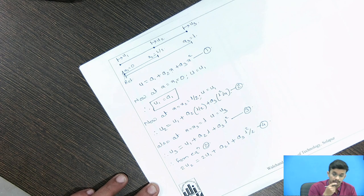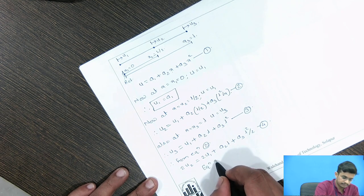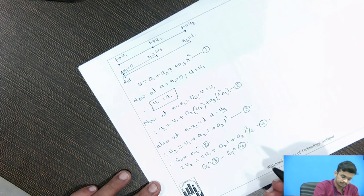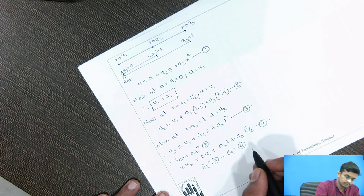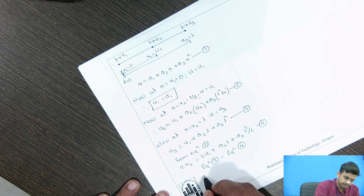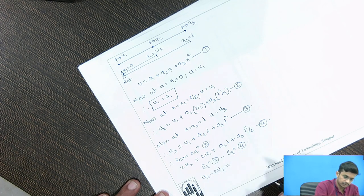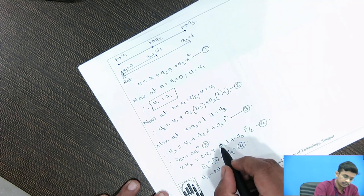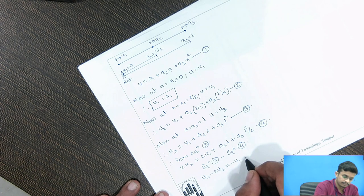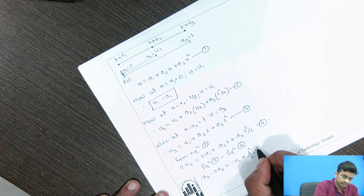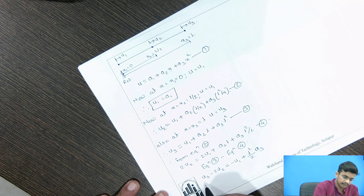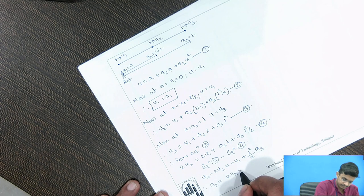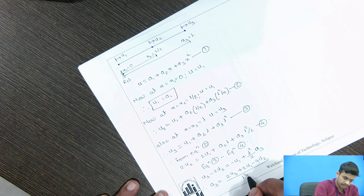We subtract equation 4 from equation 3. We get U3 minus 2U2 equals U1 minus 2U1, the A2·L terms cancel, and for A3 we get plus (L²/2)·A3. Solving for A3, we find A3 equals (2U3 plus 2U1 minus 4U2) divided by L squared. This is the value of A3.